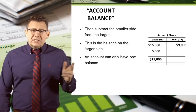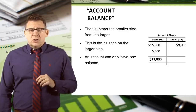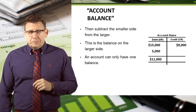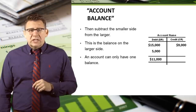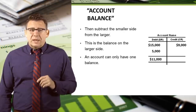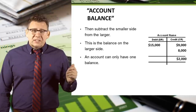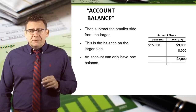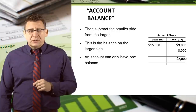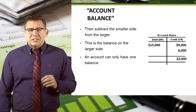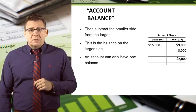In this example, debits are $20,000 and credits are $9,000, so the balance in this account is an $11,000 debit balance. In this next example, debits are $15,000 and credits are $17,000, so the balance of this account is a $2,000 credit balance.